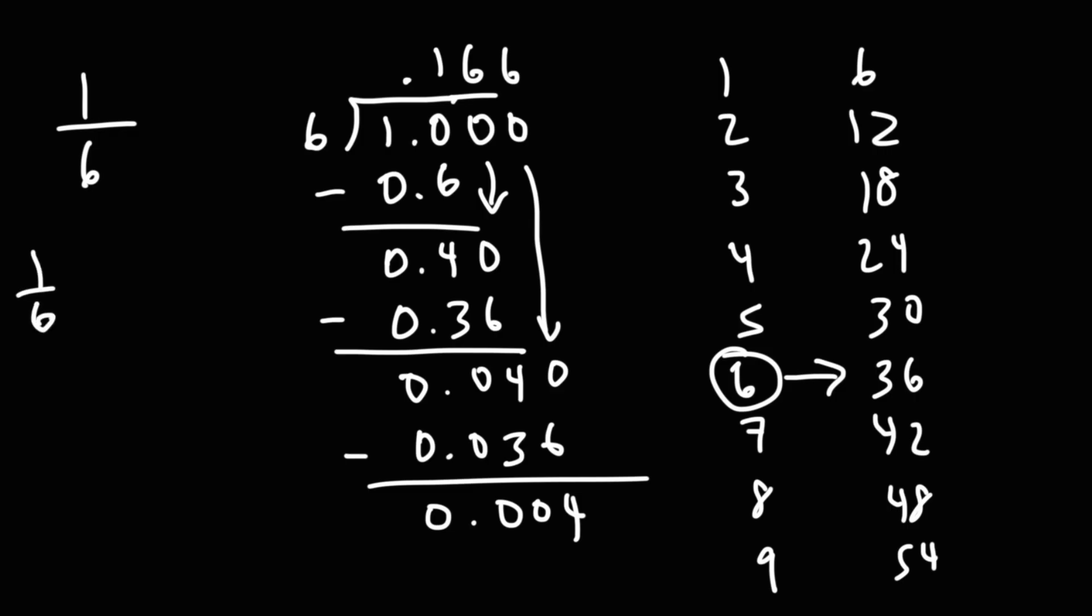So we could say that 1 over 6 is 0.1, and then 6, 6, 6, 6. That keeps on going. Or we can write it like this. 1 over 6 is 0.16. But only the 6 repeats. So we just got to put the bar over the 6, not over the 1. So this is going to be the answer, 0.16 repeating.